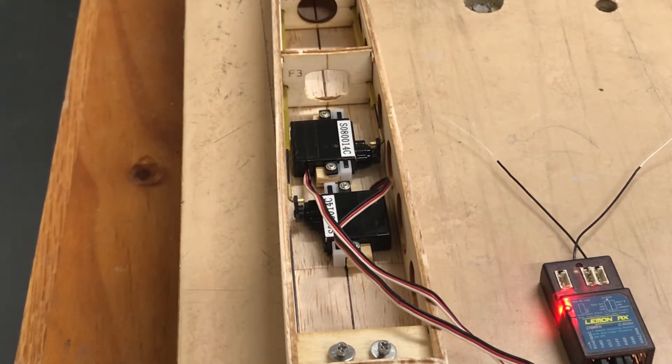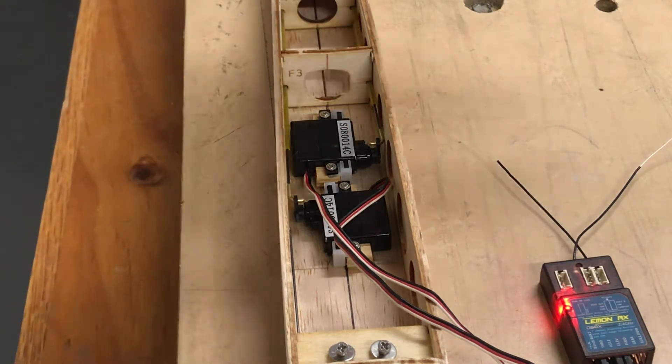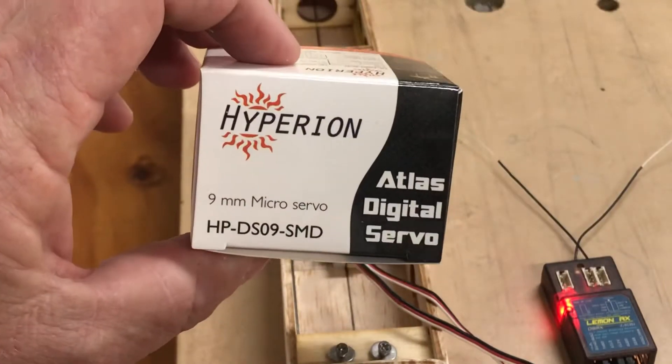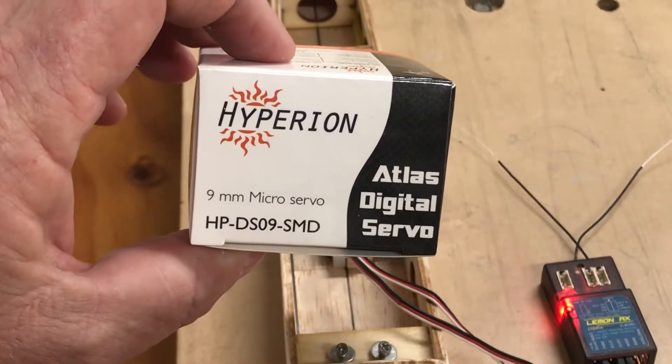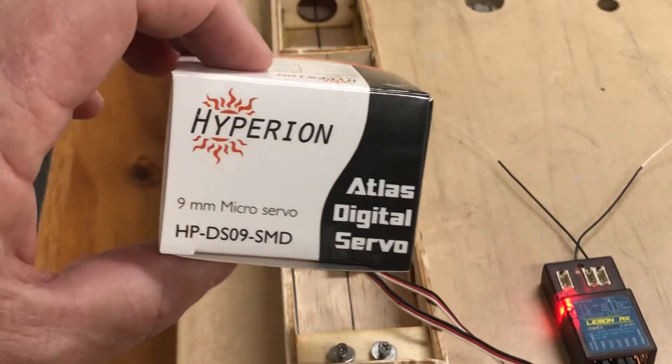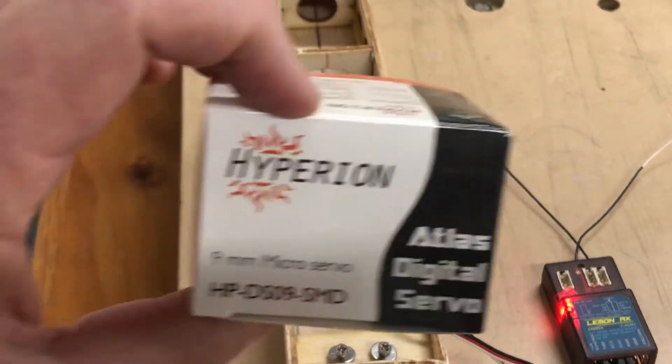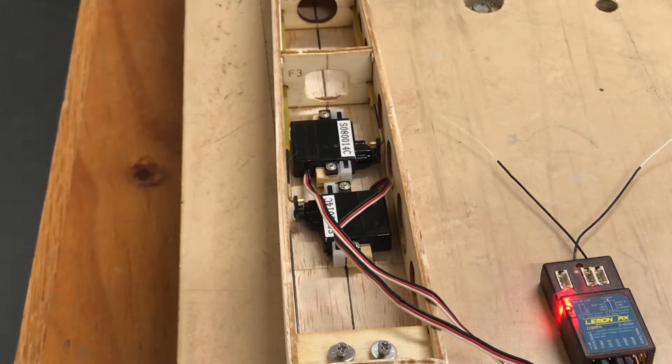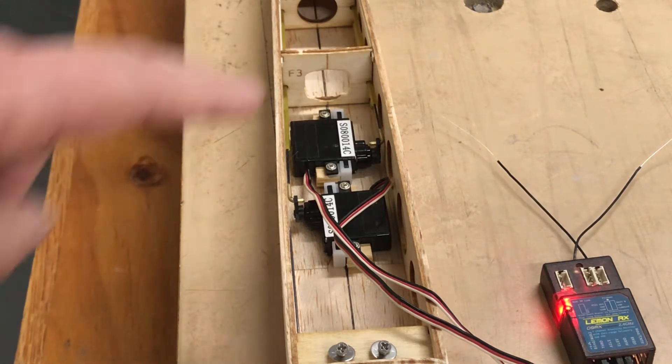Well, servos are in the fuselage now. These servos are Hyperion DSO9s. Hyperion World were clearing them out stupidly cheap, this is going back a year I guess, so I might have bought one or two and I had them already.